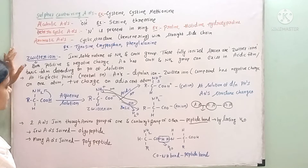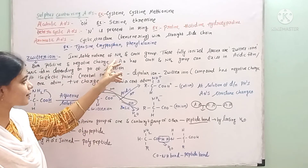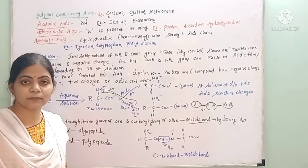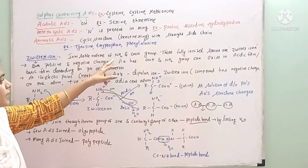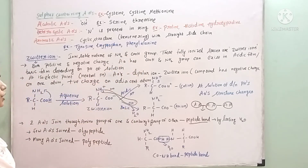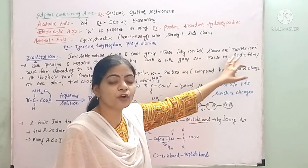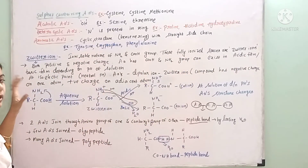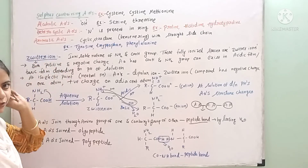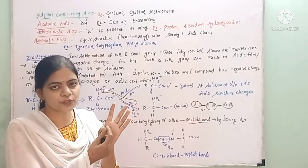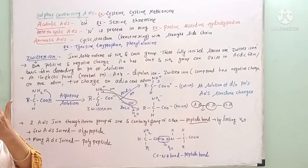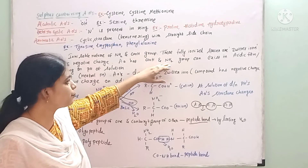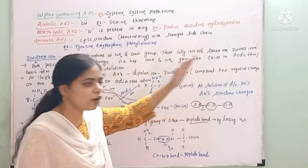An important concept in amino acids is the zwitterion concept. Amino acids have an amine group and a carboxyl group that have ionizable nature — they can dissociate into protons. These fully ionized species are called zwitterions. Zwitterions consist of both a positive charge and a negative charge, since the amino acid has both an acidic group and a basic group.